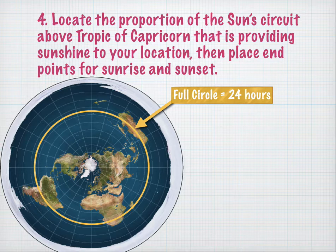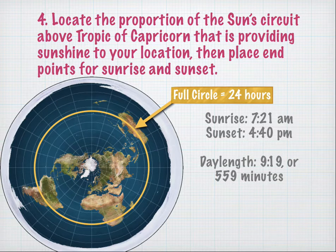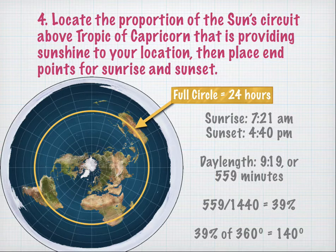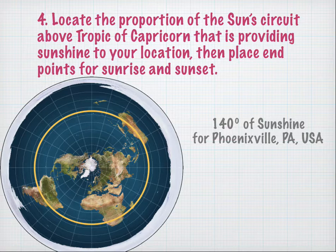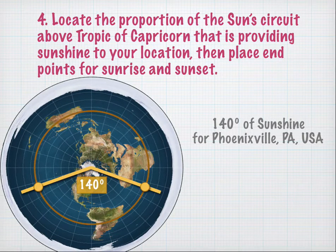Next, we figure out the proportion of the sun's circuit above the Tropic of Capricorn that's providing sunshine for your location. The sun completes one circuit of the Tropic of Capricorn in 24 hours — 360 degrees in 24 hours. Using your sunrise and sunset data, you calculate how long the day is. In this case it is 559 minutes. There are 1,440 minutes in a day, so 559 over 1440 is 39%, and 39% of 360 degrees is 140 degrees of sunshine for Phoenixville, Pennsylvania. We turn the map so that Phoenixville is lined up with the North Pole, giving us 140 degrees — sunrise on the right and sunset on the left.